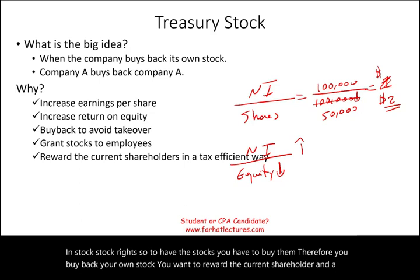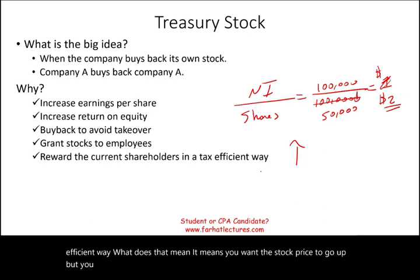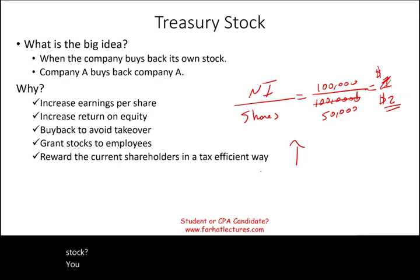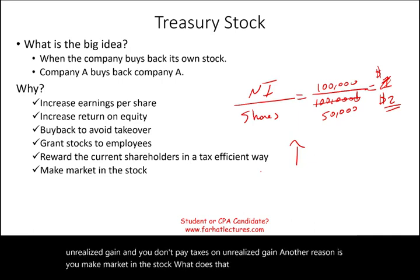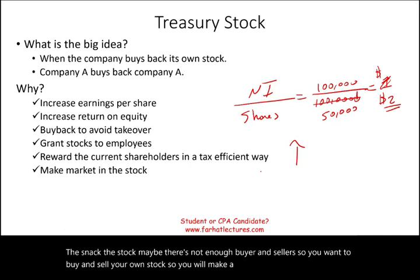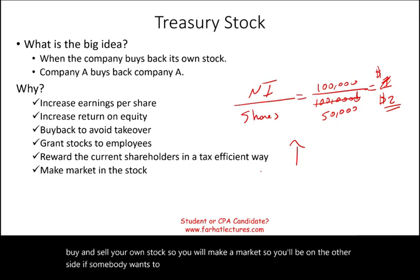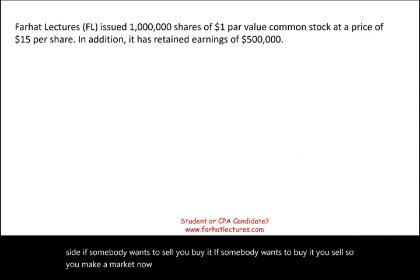Another reason is to reward current shareholders in a tax-efficient way. If you buy the stock, you bid the price up; when the price goes up, shareholders have an unrealized gain, and you don't pay taxes on unrealized gains. Companies also buy back their own stock to make a market — if there aren't enough buyers and sellers, you buy and sell your own stock to be on the other side of transactions.